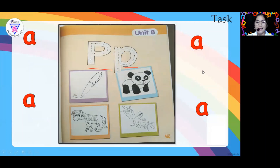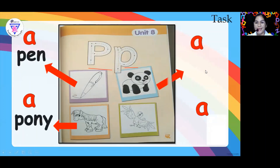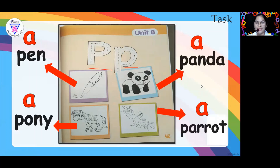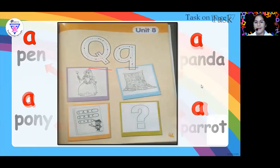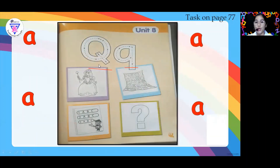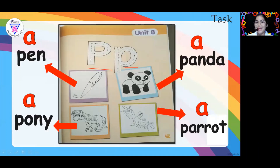Next to that is a panda, a pen, a pony, a panda, and a parrot. We also have here letter Q — the capital Q and the lowercase q. By the way, what is the sound of the letter P?